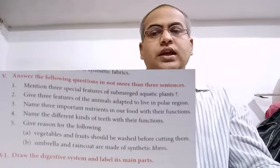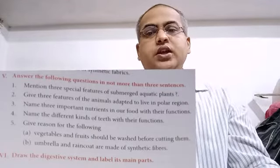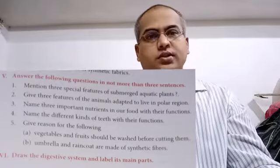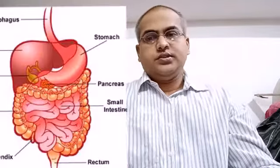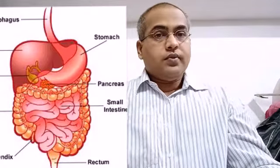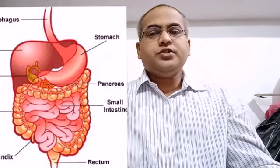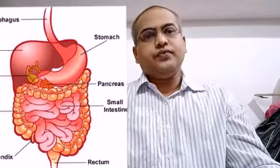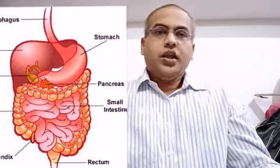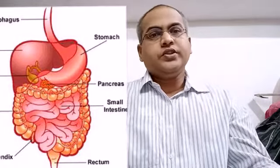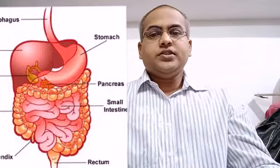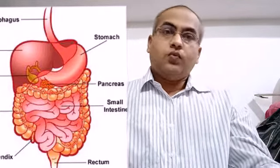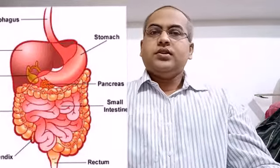Now comes the next question: list three causes of communicable disease. Number 1, due to germs mixed in air, water, and food. If you are eating food which contains germs, you will get affected by disease.